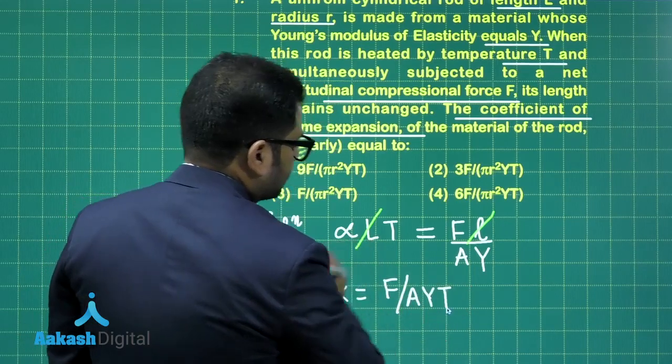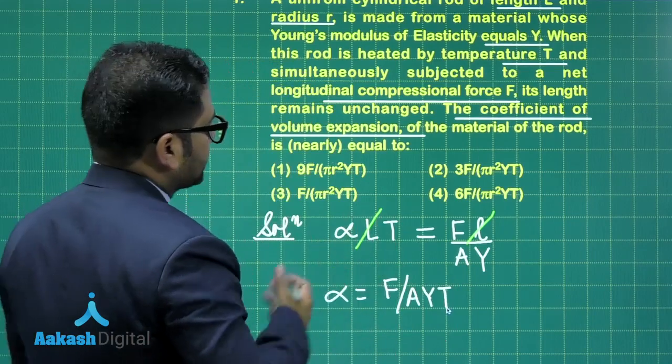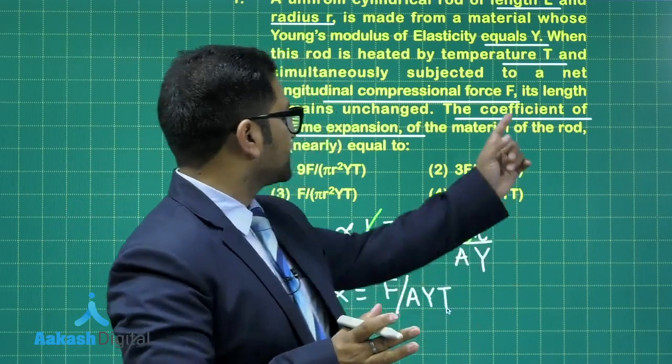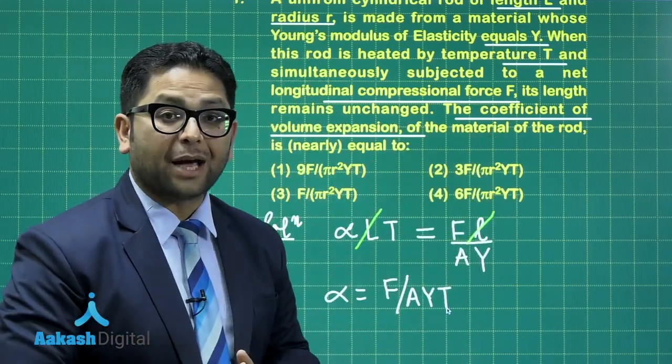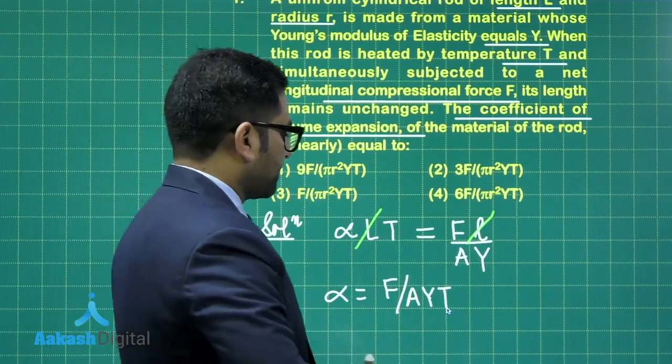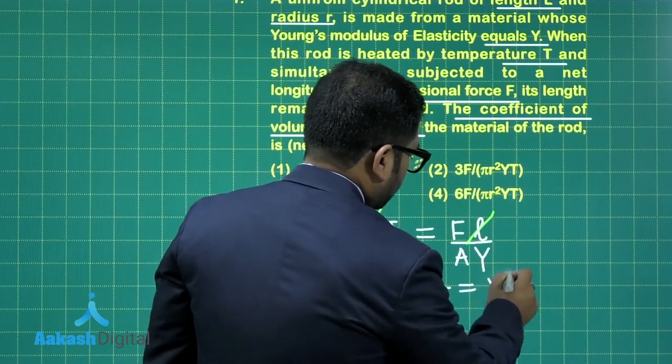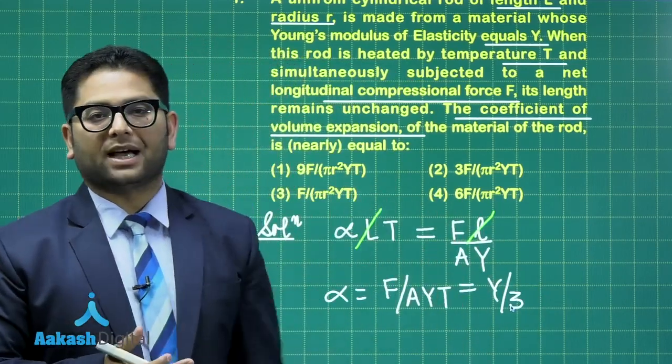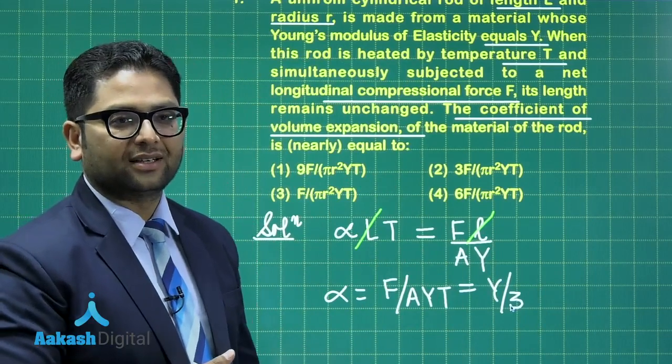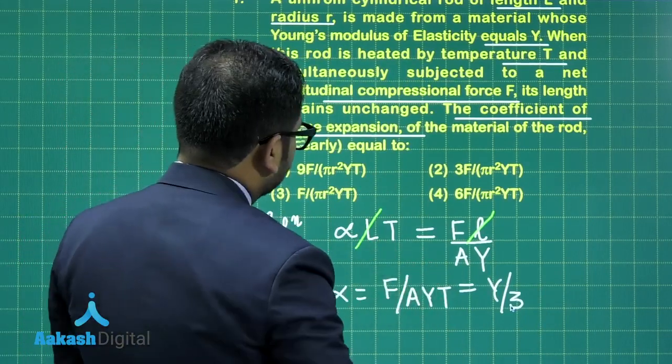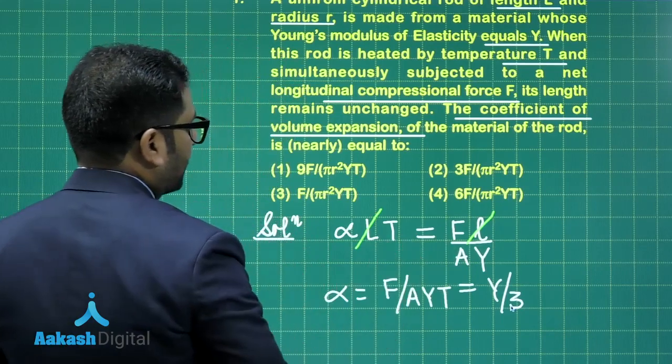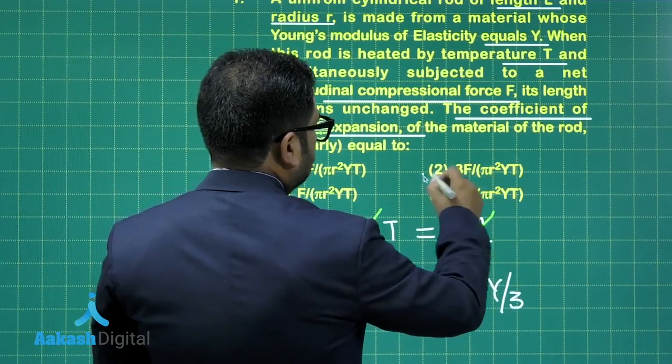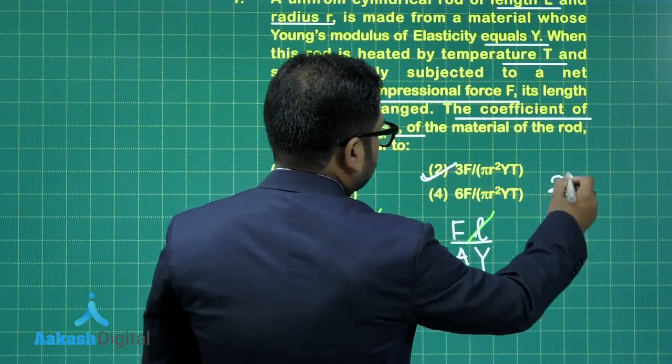The cross sectional area would be pi r square, but we were supposed to calculate the coefficient of volume expansion gamma. Alpha would be related to gamma by alpha equals gamma by 3, since alpha is to beta is to gamma as 1 is to 2 is to 3. So you can distinctly see the value of gamma would be 3F by pi r square Y into T. So option number 2 would be the correct option for this question.